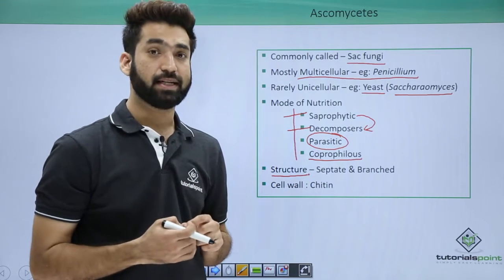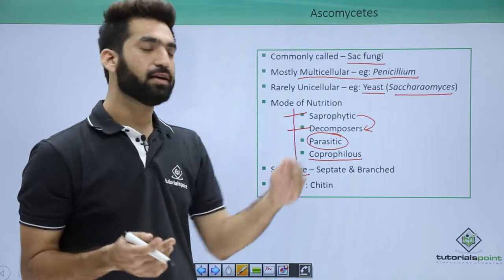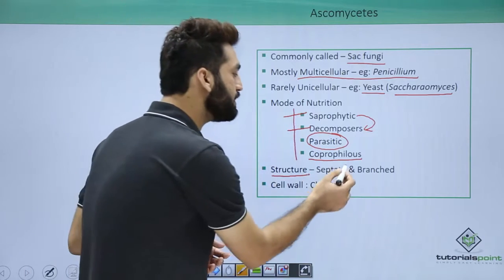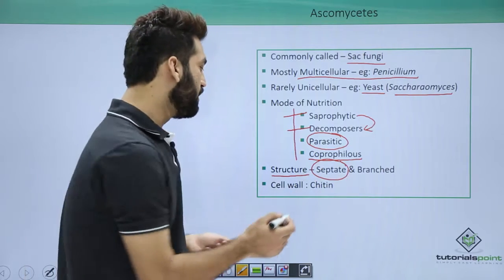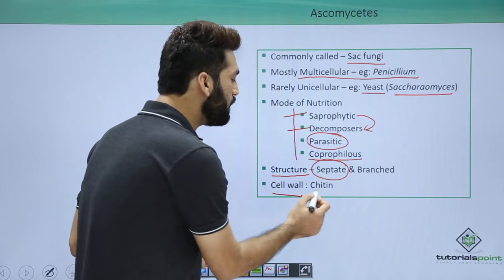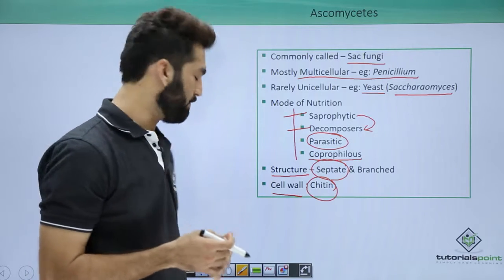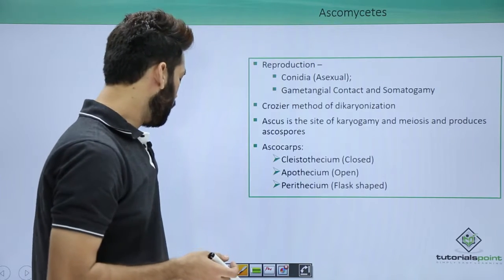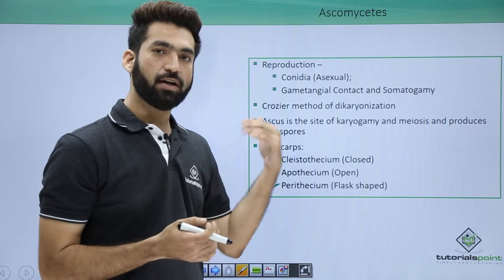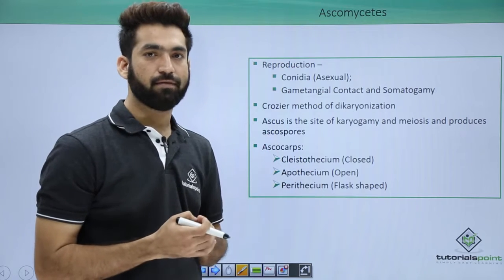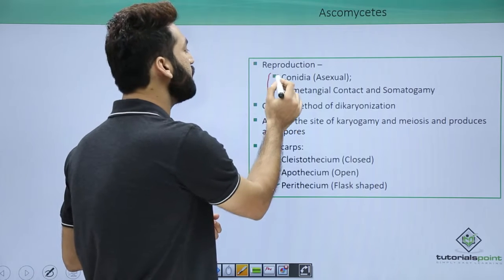In Phycomycetes the mycelium is aseptate, but in all other classes you will see septate mycelium. So Ascomycetes have septate, branched mycelium. The cell wall is always made up of chitin. Chitin is present in all other classes. Only Oomycetes members have a cellulosic cell wall; all other members have a cell wall made up of chitin.